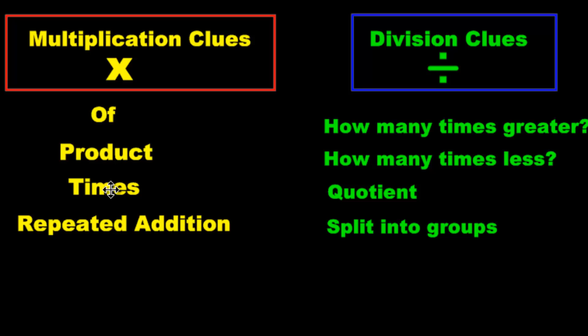Difference, how many more? Those are tricky ones. How many more always means subtraction. How much less? Remember the ER words like how much longer is this line compared to that line? How much taller is this person compared to the other person? Those ER words—taller, shorter, wider, stronger, heavier—they all mean subtraction.